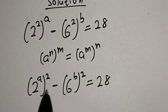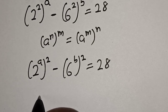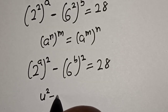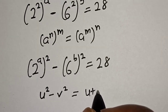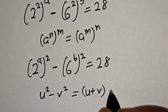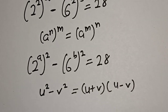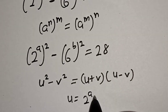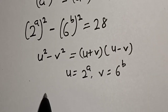Now if you look at this carefully, this is a difference of squares. Remember the rule: u squared minus v squared equals u plus v multiplied by u minus v. In this case, u is equal to 2 to the power of a, and v is equal to 6 to the power of b.